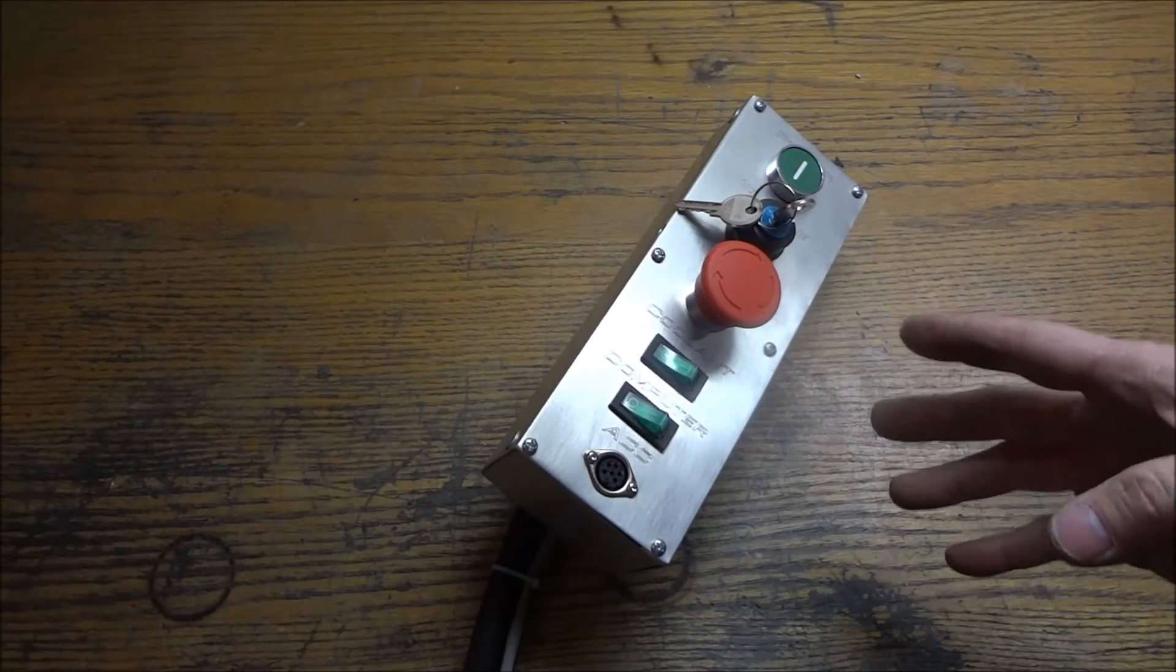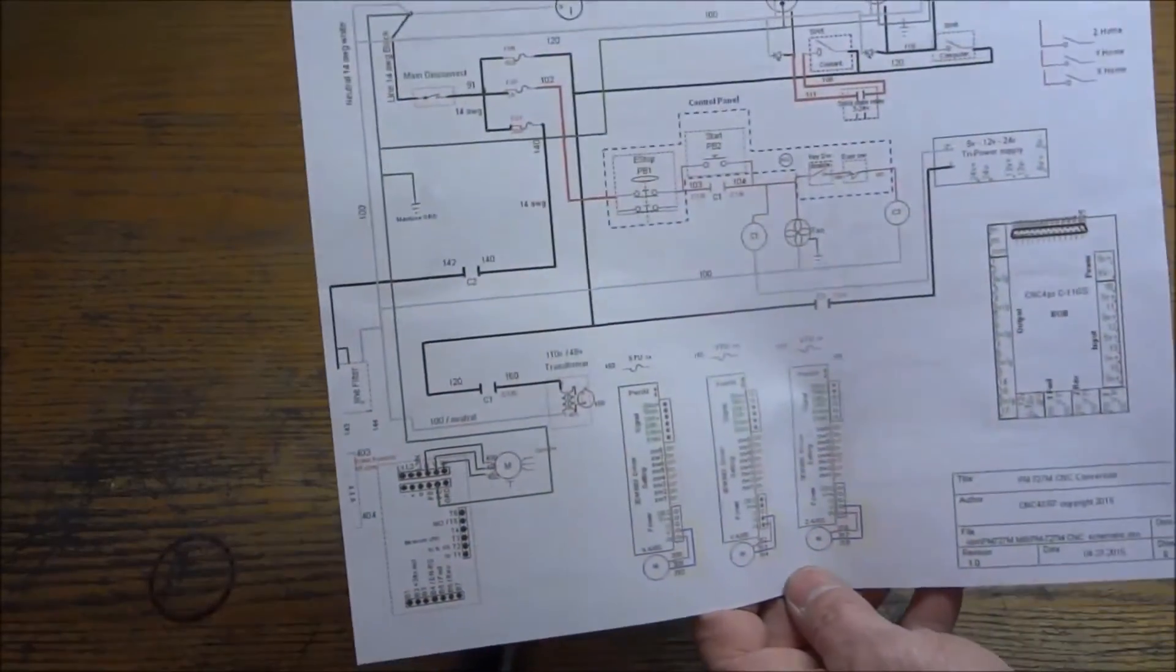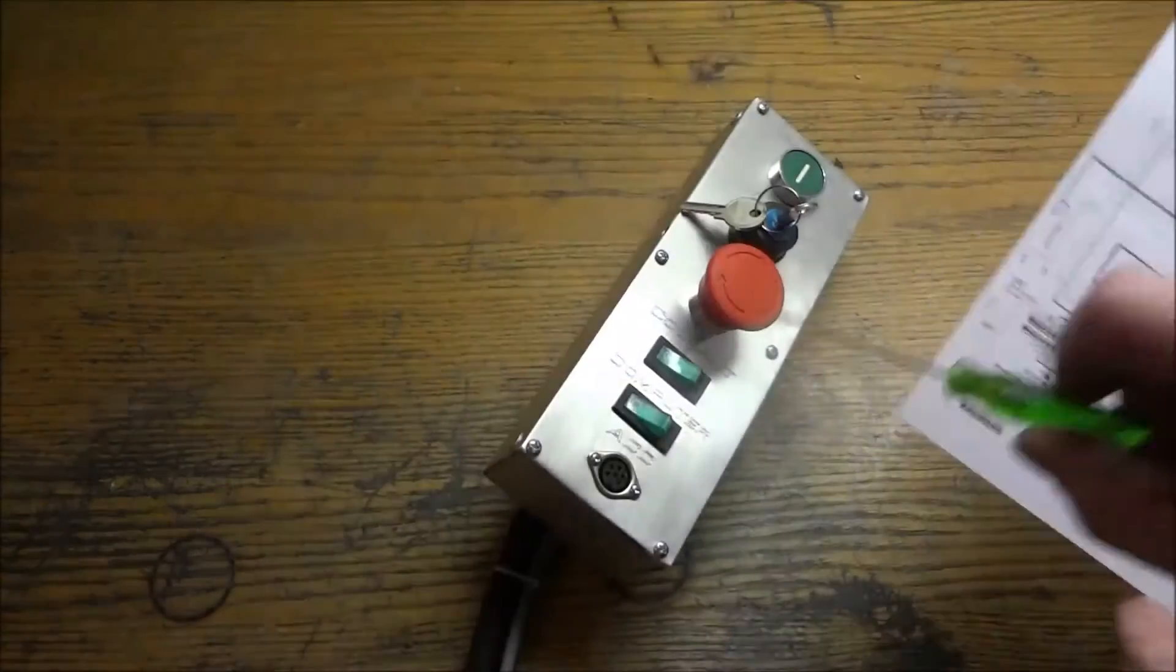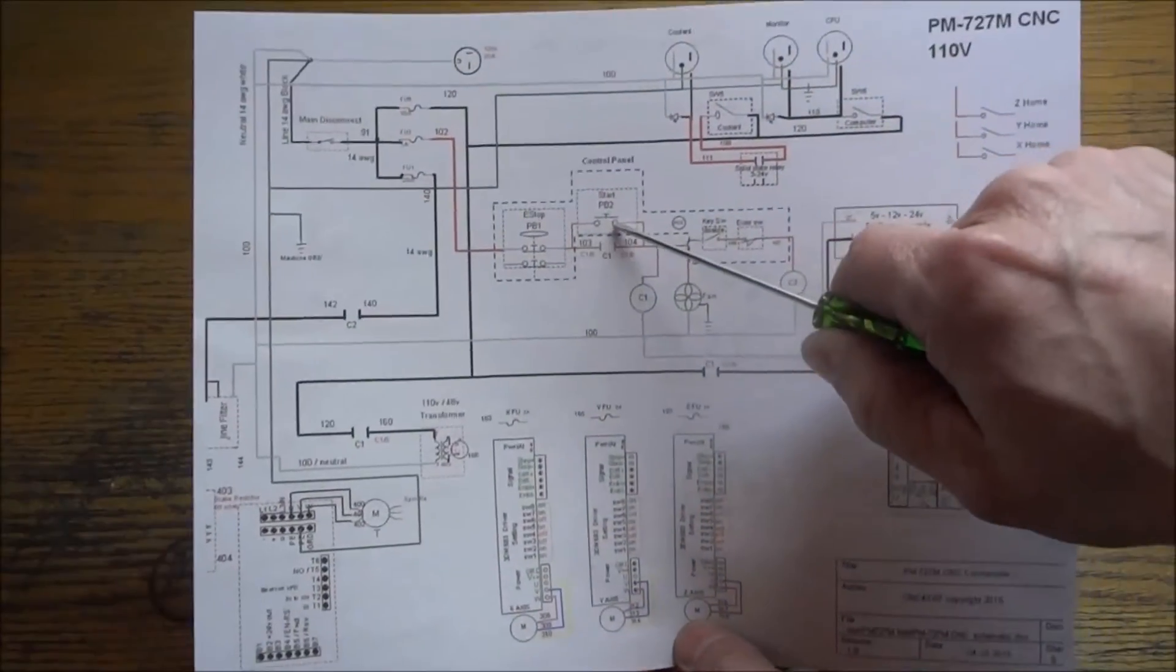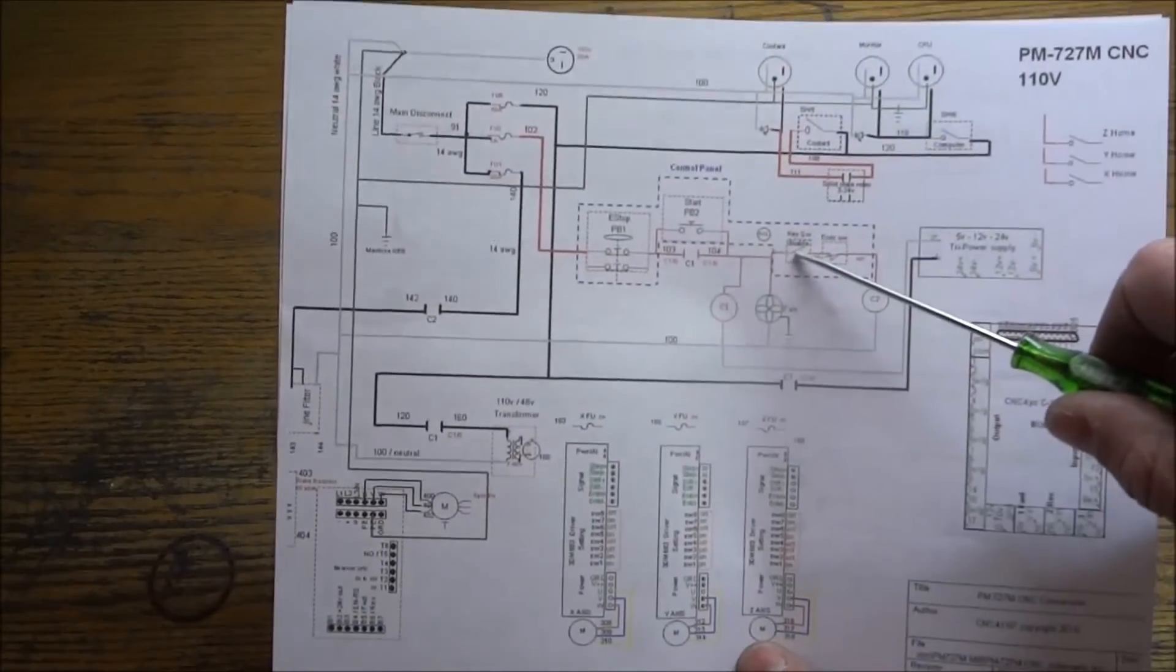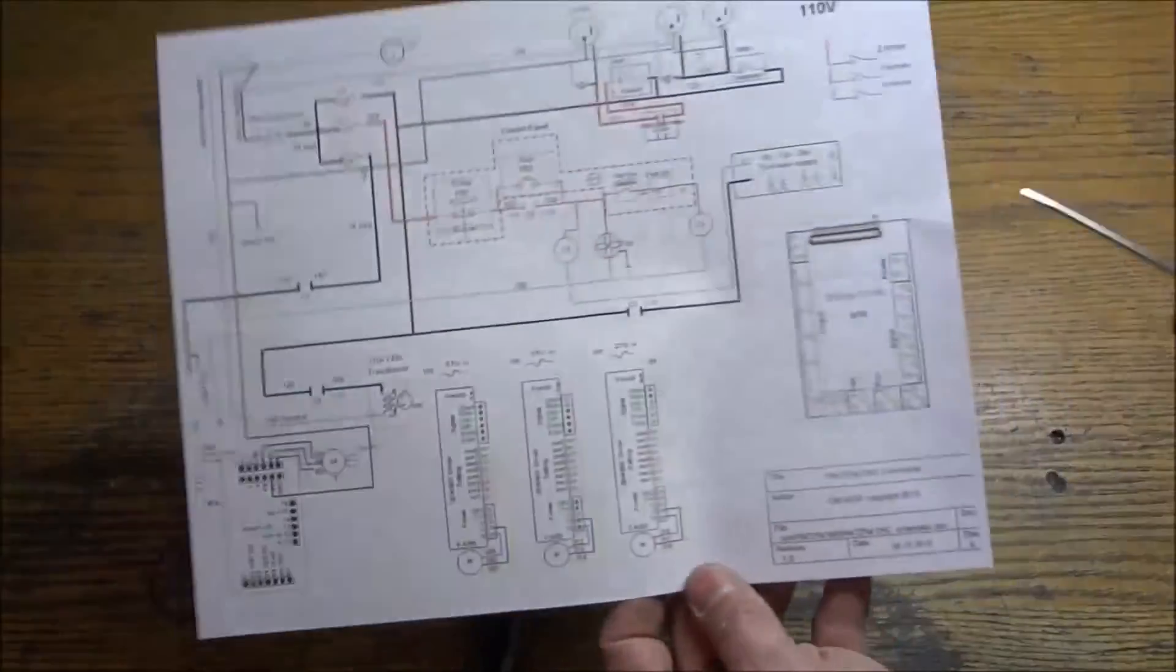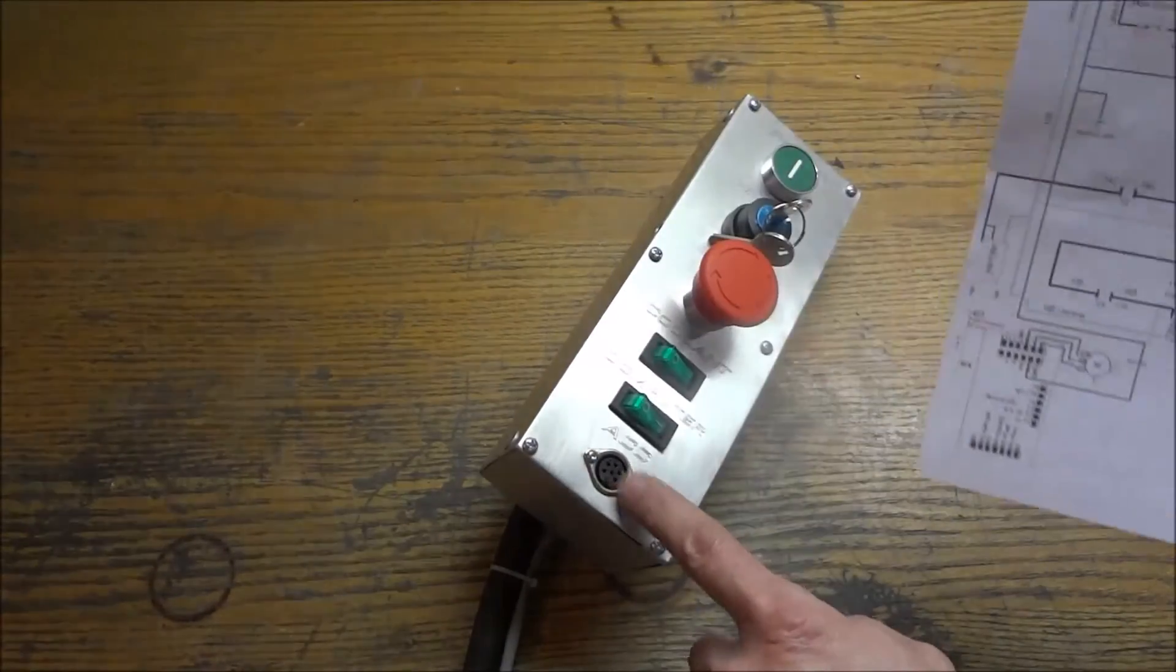Well that completes our last 110 volt circuit. That was FU3, that was a 1 amp circuit breaker for our control circuit up to our control panel. We have our power on start button, our spindle lockout key switch, we have our E-stop, our coolant on switch, and our computer on switch, and our accessory DIN connector.